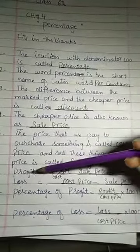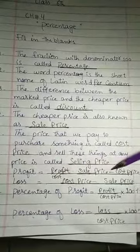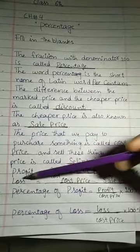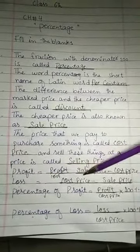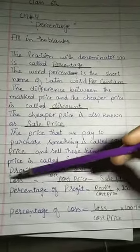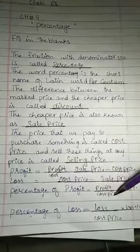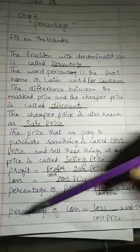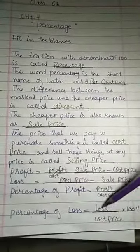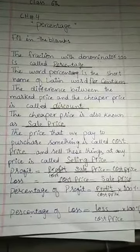Number 6: Formula of profit: profit equals sale price minus cost price. Formula of loss: loss equals cost price minus sale price. Number 7: Percentage of profit equals profit divided by cost price multiplied by 100%. Number 8: Percentage of loss equals loss divided by cost price multiplied by 100%.